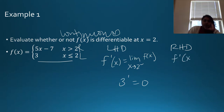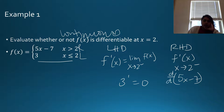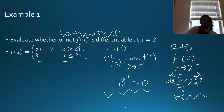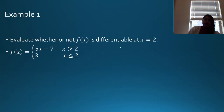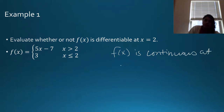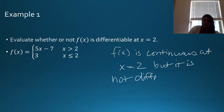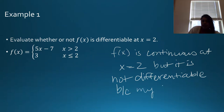From the right, f′ is the derivative of 5x − 7. The constant −7 goes to zero, and the derivative of 5x is 5. So my left-hand derivative is 0 and my right-hand derivative is 5 — they do not equal each other. Therefore, f(x) is continuous at x = 2, but it is not differentiable because the left-hand derivative does not equal the right-hand derivative.